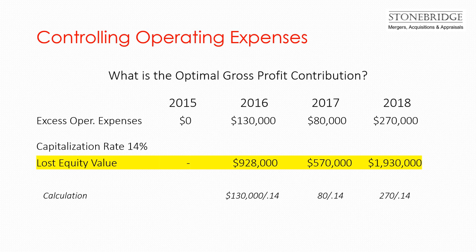Let's now apply the capitalization rate of 14% to the excess operating cost to see how this impacts the company's value. In 2016, the company value was reduced by $928,000; $570,000 in 2017; and almost $2 million in 2018.